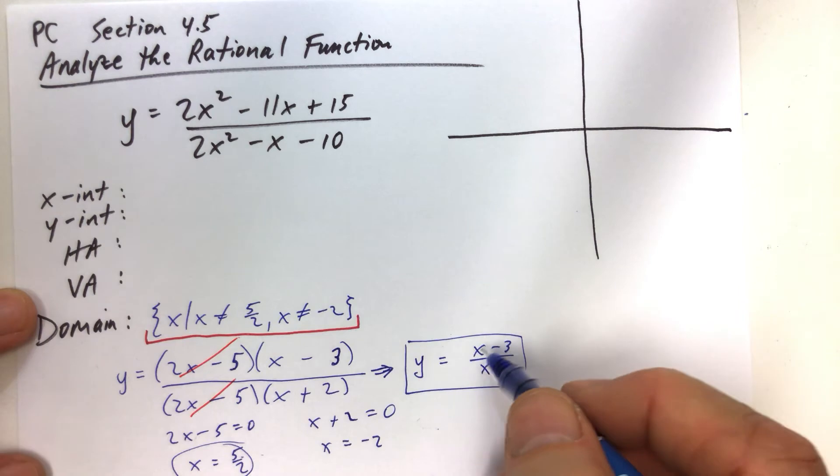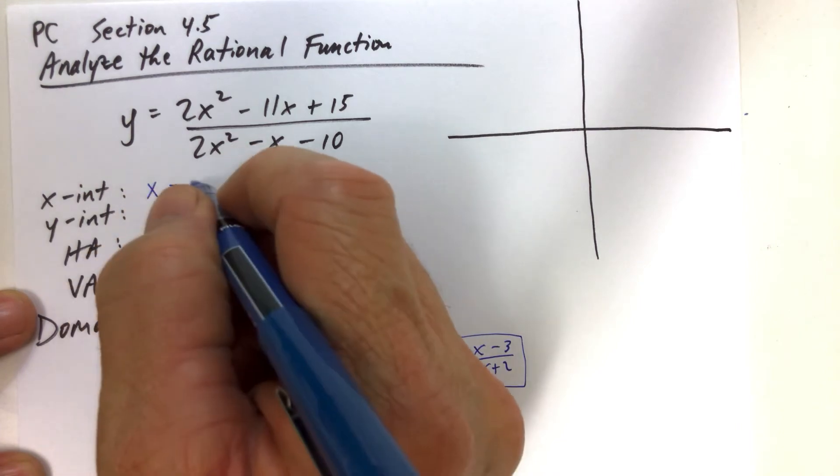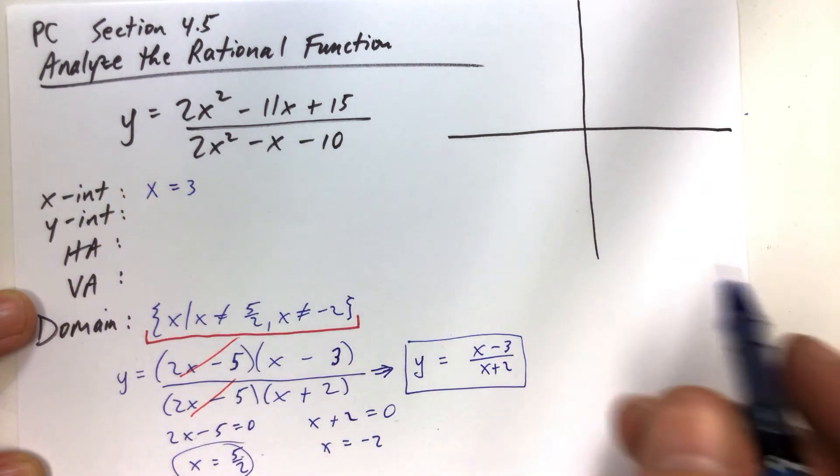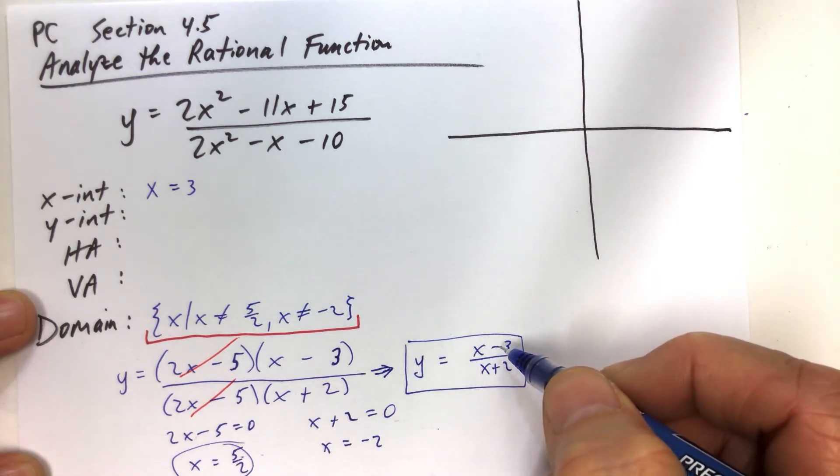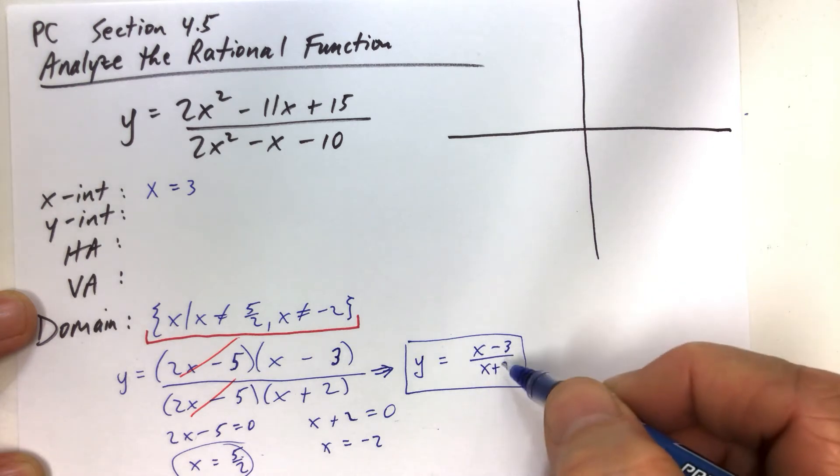So x-intercept, we get the x-intercept when we set the numerator equal to 0. So when x minus 3 is equal to 0, we see that x is equal to positive 3. So x is equal to positive 3. And so 3, when you replace x with 3, it causes the fraction to equal 0, 0 over 5, and that's 0. So that's an x-intercept.